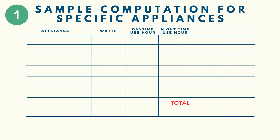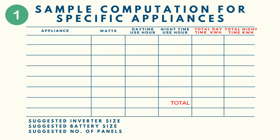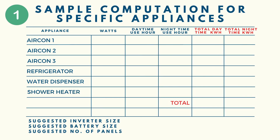Most questions we receive are of this type — where only specific appliances are mentioned. Let's say you only plan to power three aircons, one refrigerator, one water dispenser, and one shower heater. List down the watts of each appliance, then determine how many hours each will be used and whether during daytime or nighttime.